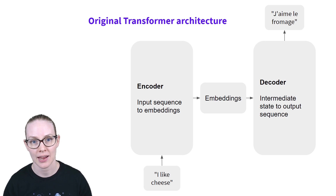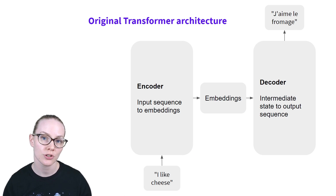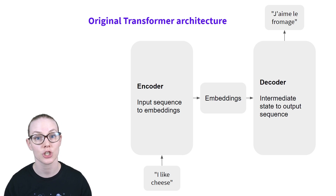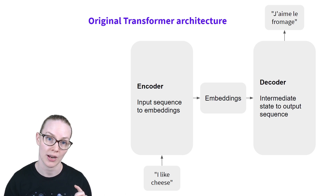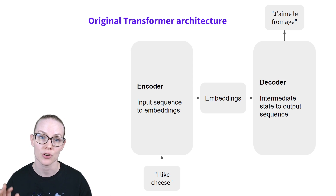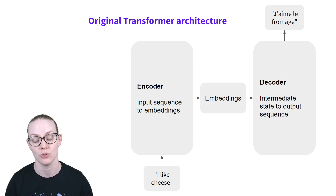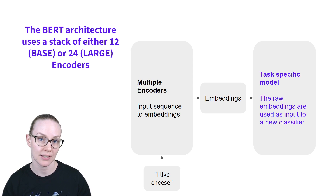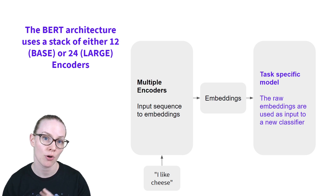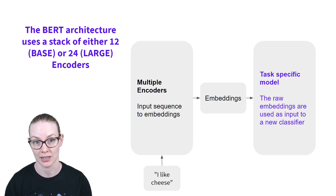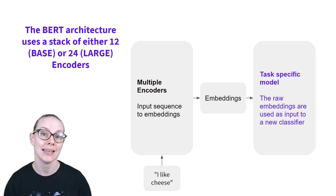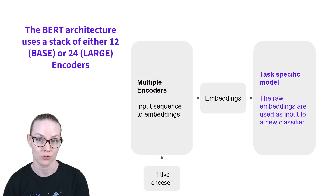Let's talk a little bit about the details of the BERT architecture. The original Transformer architecture uses a traditional sequence-to-sequence model where you have an encoder that takes your input and turns it into embeddings, and a decoder that takes those embeddings and turns them into a string output. BERT is a little bit different — it takes multiple encoders and stacks them on top of each other. One way of using the model is to take the embeddings from those multiple encoders, often the last layer of the last network, and use those as input into a new classifier that you've trained.